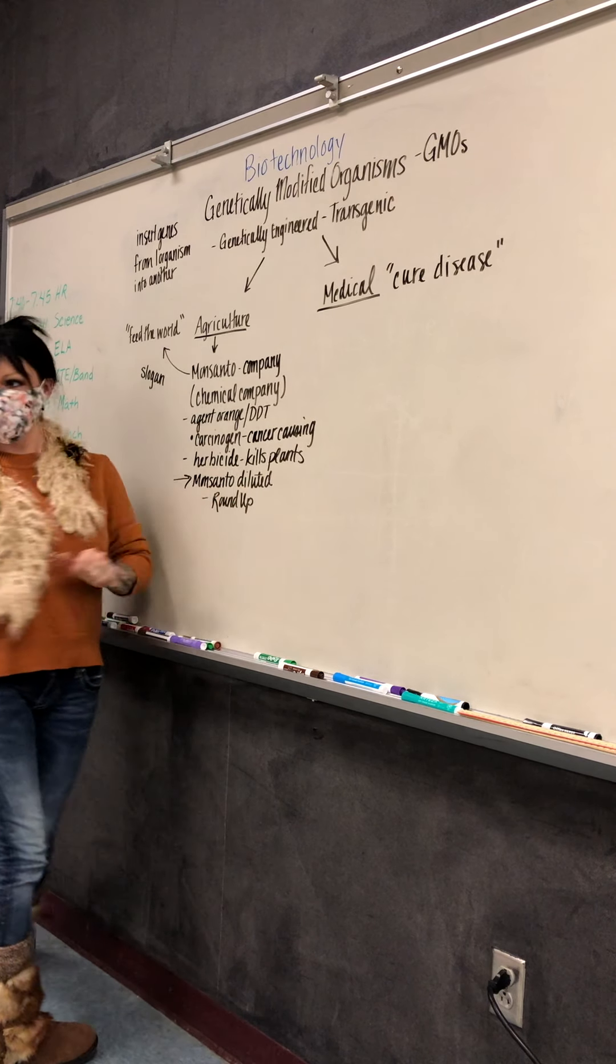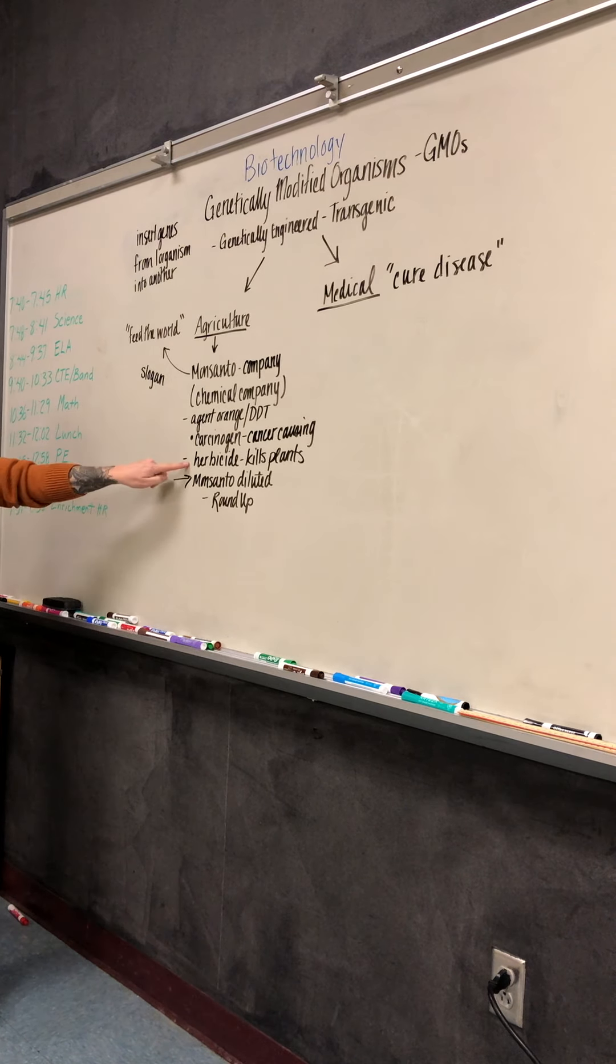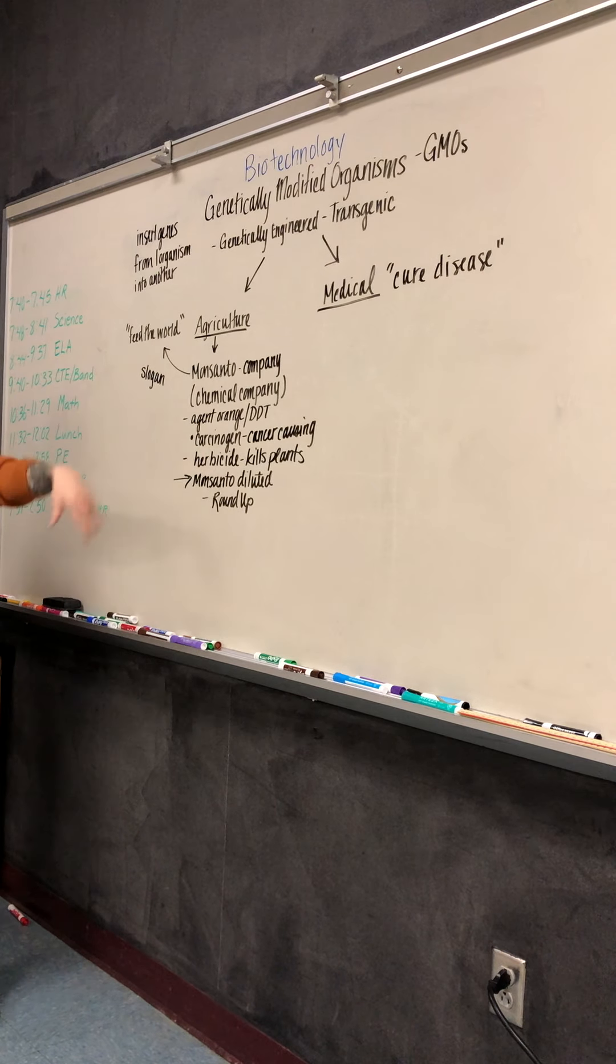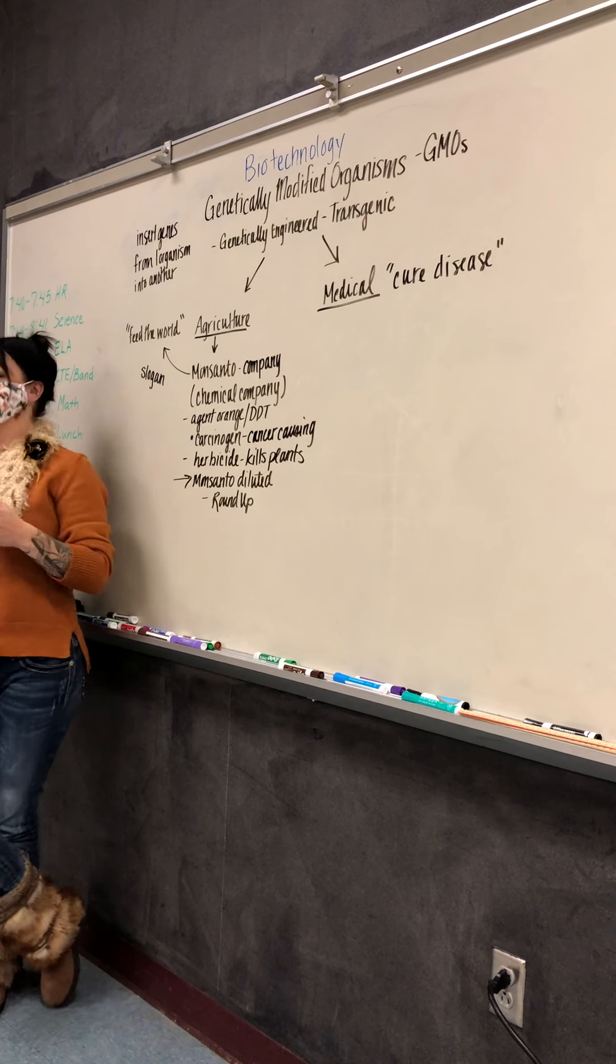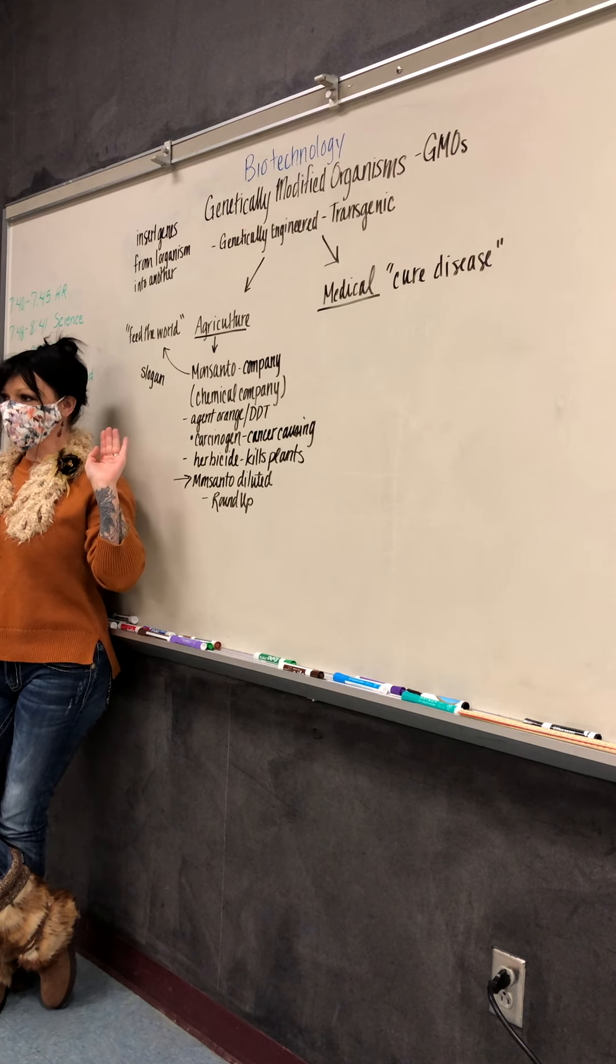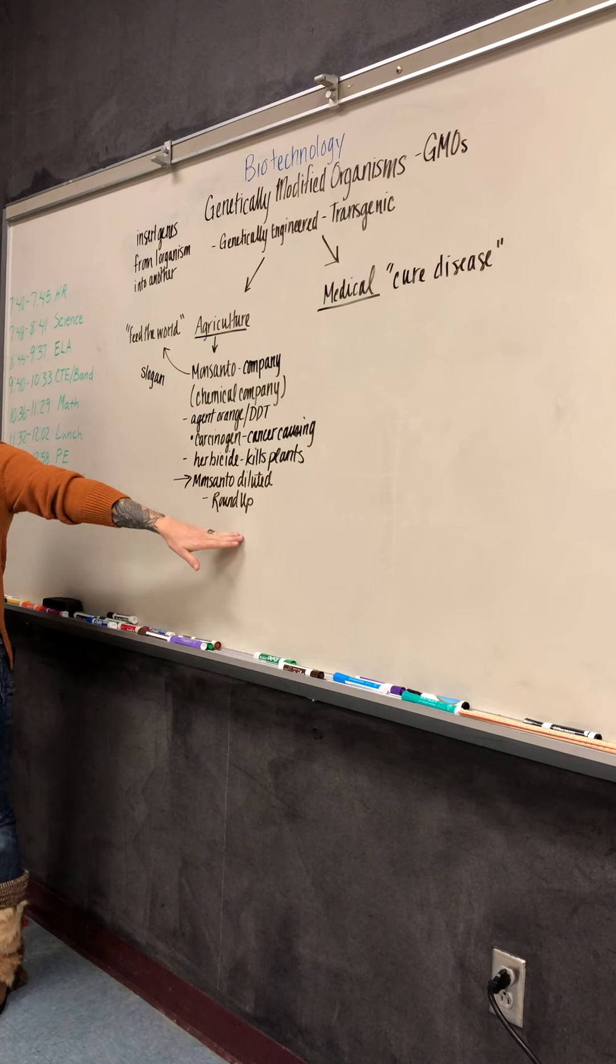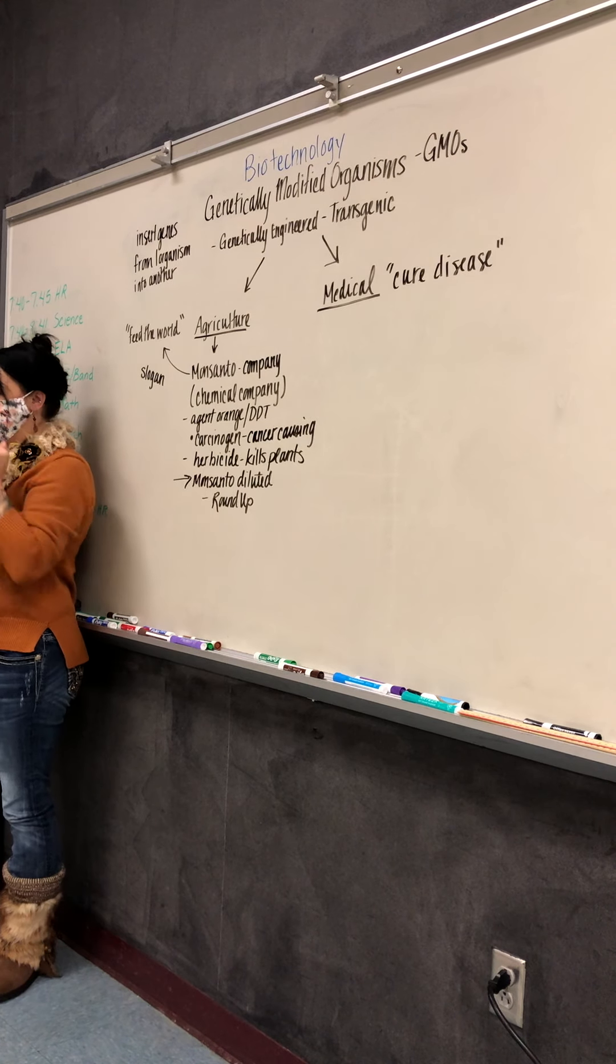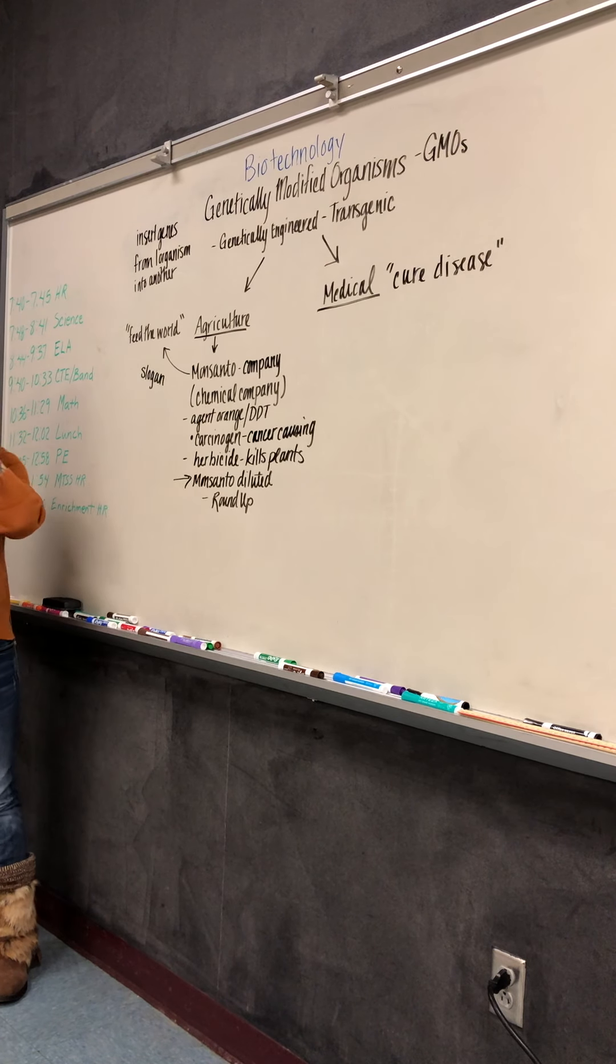And they made Roundup. What is Roundup? It's a weed killer. Still an herbicide. It's by the same company that developed Agent Orange and DDT. They just diluted it down a little bit to where it's not going to kill you right away. It's still a carcinogen. It's still going to cause long-term health effects if you're exposed to it. So that's the background of the company. They were a chemical company. So then they developed Roundup. Get rid of the weeds in your yard.